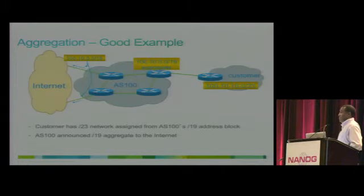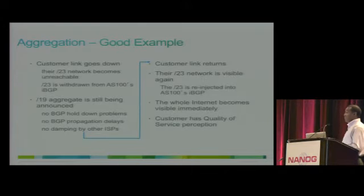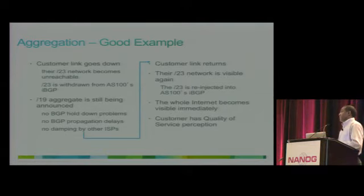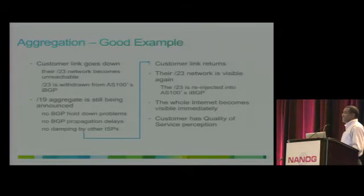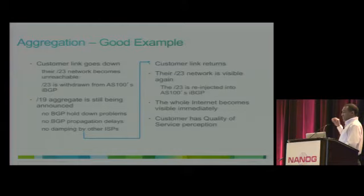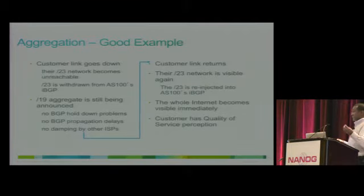Here is a good example. AS100 has assigned a /23, but is only advertising the /19. So when the customer link goes down, the route is withdrawn from AS100, but nothing happens to the rest of the internet — the impact is only local. And for the customer, since traffic is still coming to that prefix and getting dropped at the upstream ASP (AS100), when the traffic resumes, the customer will receive it quickly. So it's good for the customer and good for the rest of the internet.